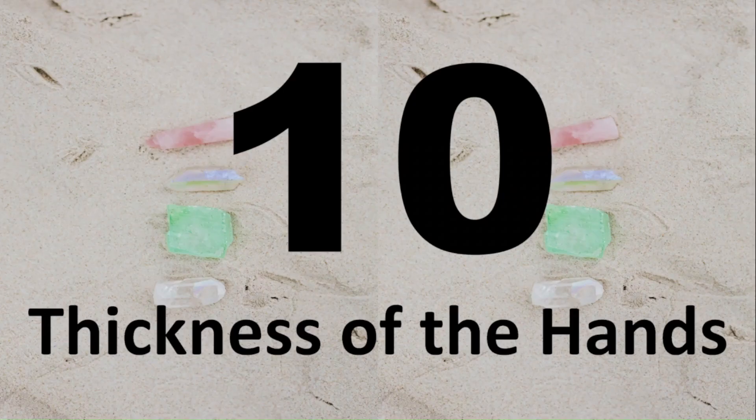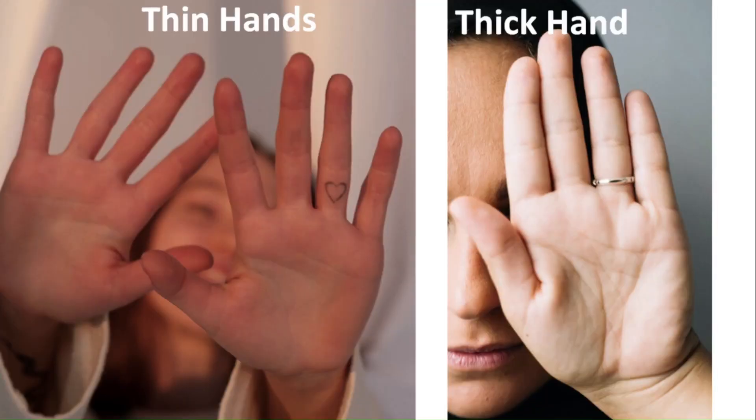Number 10, the thickness of the hands. People with thick fleshy hands like the one on the right are more sensual and earthy. They enjoy the physical pleasures in life and may be fond of luxuries.